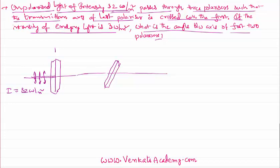It is then passed through a second crystal. We don't know the angle — let's assume the angle of the axis of the second crystal with the first crystal is theta. There is a third polarizer also, set in such a way that its axis is crossed with the axis of the first one.